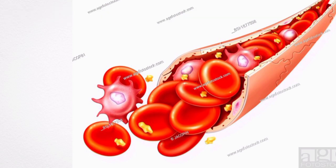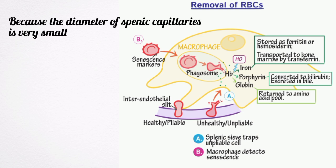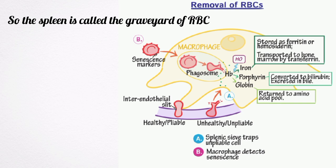The destruction occurs mainly in the capillaries of the red pulp of the spleen, because the diameter of splenic capillaries is very small. So the spleen is called the graveyard of red blood cells.